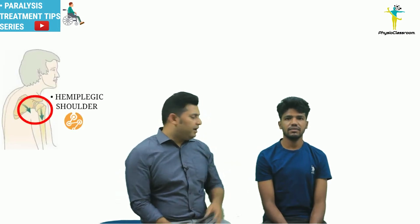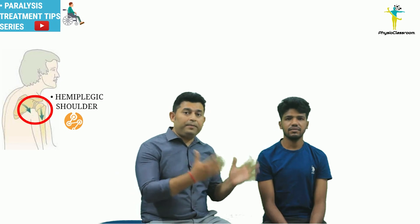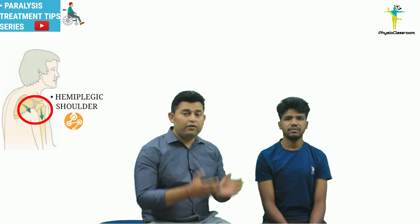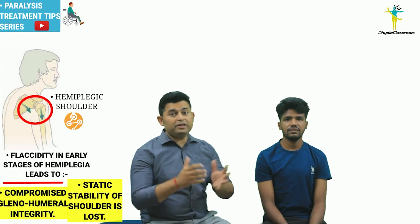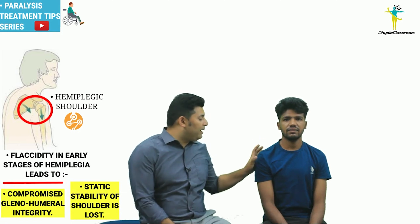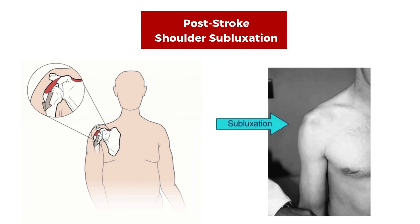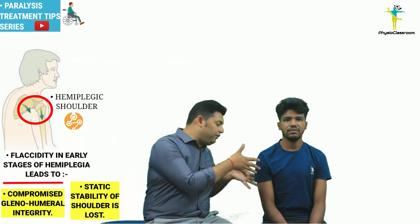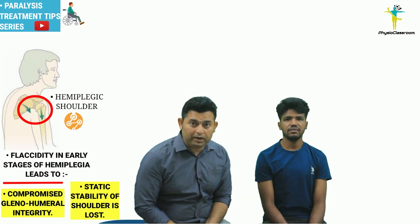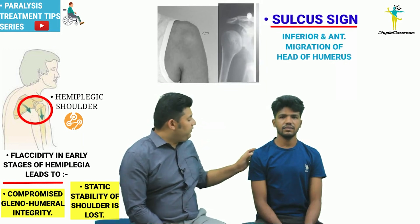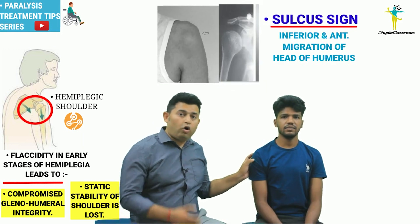Let's first quickly discuss what actually happens in a hemiplegic shoulder that makes it more susceptible to subluxation and pain. During the flaccid phase, the glenohumeral integrity is significantly compromised. The muscles responsible for providing shoulder support and counteracting the inferior pull of gravity are not functioning properly.